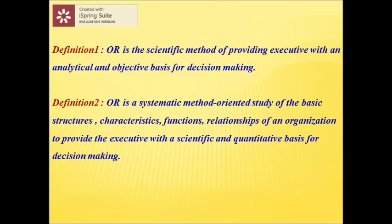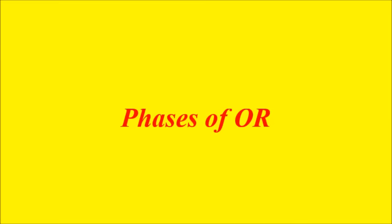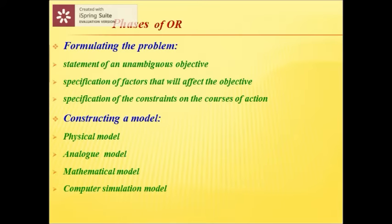The first definition is: OR is a scientific method of providing executives with an analytical and objective basis for decision-making. The second definition: OR is a systematic, method-oriented study of the basic structures, characteristics, functions, and relationships of an organization to provide the executive with a scientific and quantitative basis for decision-making.